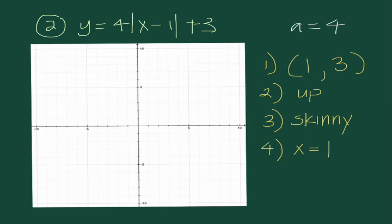When graphing this, I start at 1, 3 and place a point. Since A equals 4, I treat it like a slope — I go up 4 and to the right 1 in both directions, then draw a nice V shape. I also sketch my line of symmetry to show that I understand this V is symmetric.